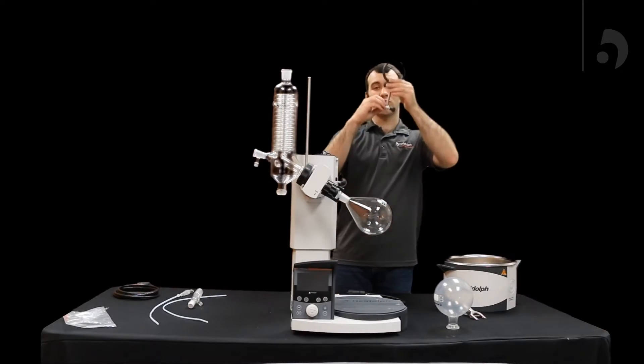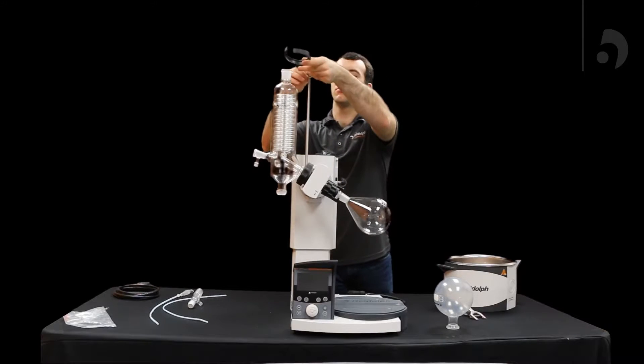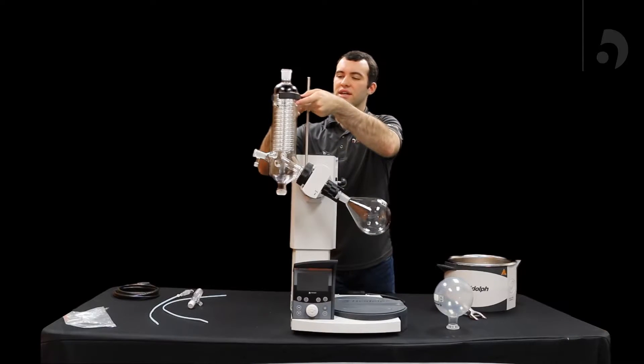Once you've done that, you can grab the support rod clamp, pull that on over, then tighten the screws on it, make sure it stays put.